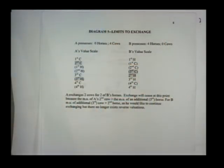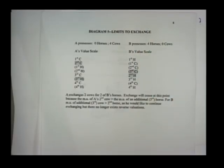Two exchanges are made. We're assuming the ratio of exchange is one horse for one cow. Certainly, if you look at the fourth cow on A's value scale, he values it much less than the first horse he doesn't possess, which in parentheses is far above it. So he exchanges his fourth cow for the first horse.